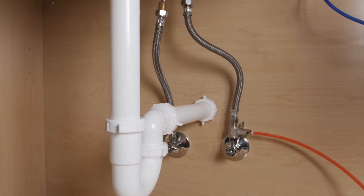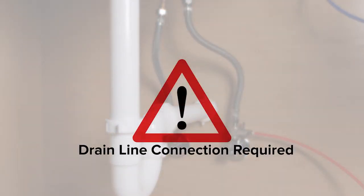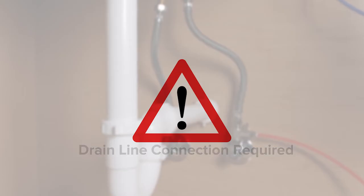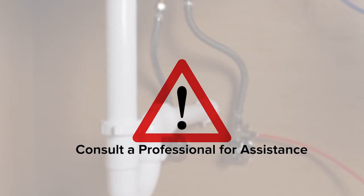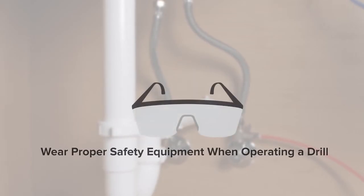As the circle reverse osmosis system creates wastewater, you will be required to have a drain line connection. This can be a pre-existing quarter-inch quick connection or this can be drilled into the drain pipe. The following steps display how to drill into the drain pipe. If unsure about this process, please seek professional help and always wear safety protection including safety goggles.